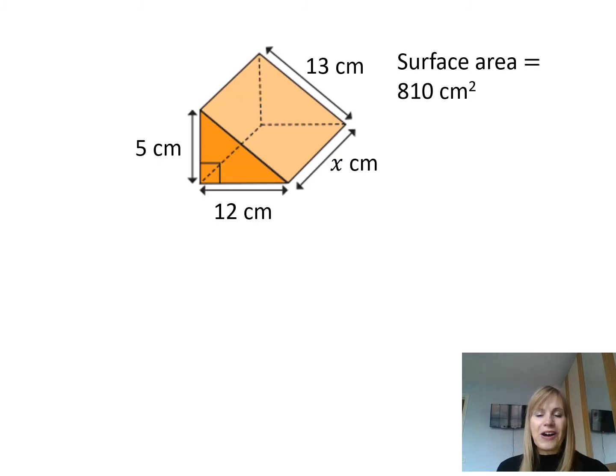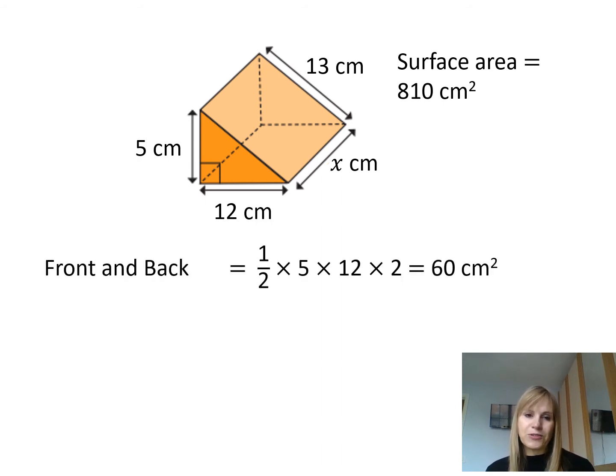So here's one final example. This one's a bit tricky. We've been given the total surface area of the shape but we're missing one of the lengths, but I'm going to go about it exactly the same way. I'm going to find the areas of all the sides using the information I'm given. So first of all the front and back of this triangular prism I'm going to do half times 5 times 12, and because there are two sides like that I'm going to times that by 2, so half times 5 times 12 times 2 because there are two sides is 60 centimeters squared.